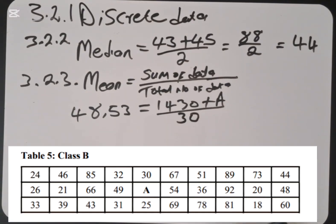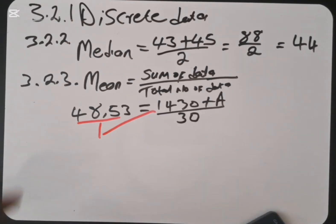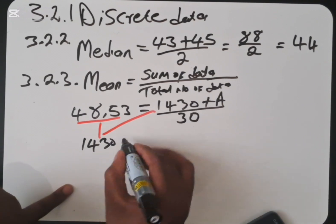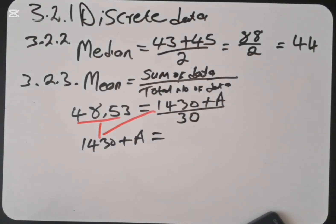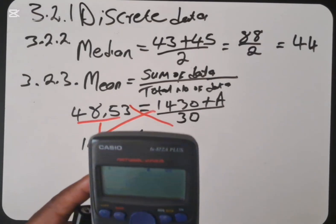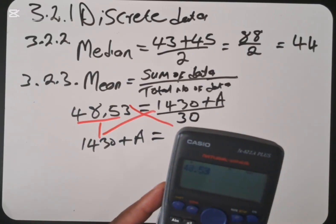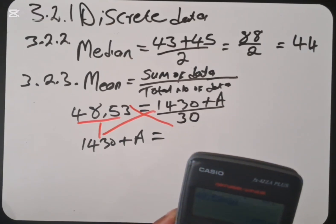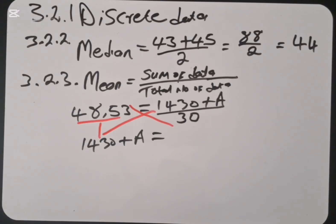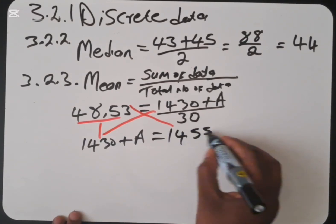Now we must calculate the value of A. So what we need to do here is to try to make this one a fraction also, then you cross multiply. Say 1 multiplied by 1480 plus A, it's still going to give you 1480 plus A, which is equal to, do the cross multiplication. Now we have 48.53 multiplied by 30. I find that my answer is 1455.9.